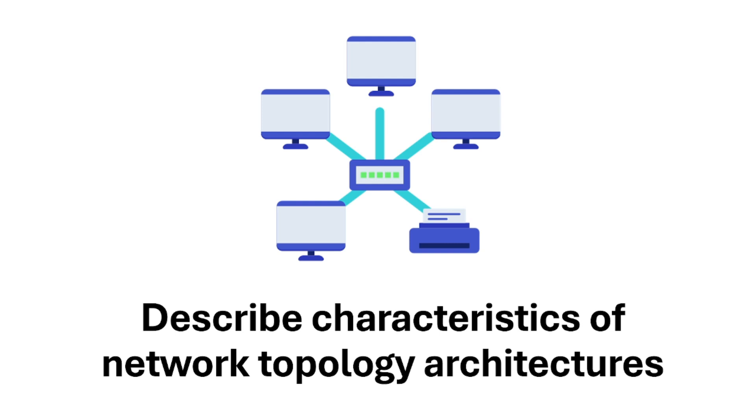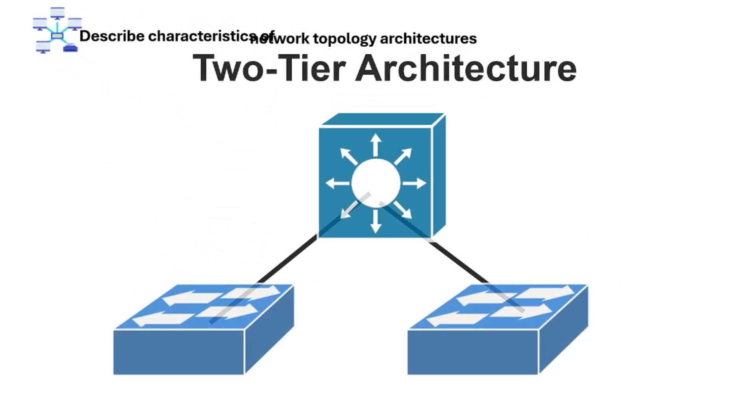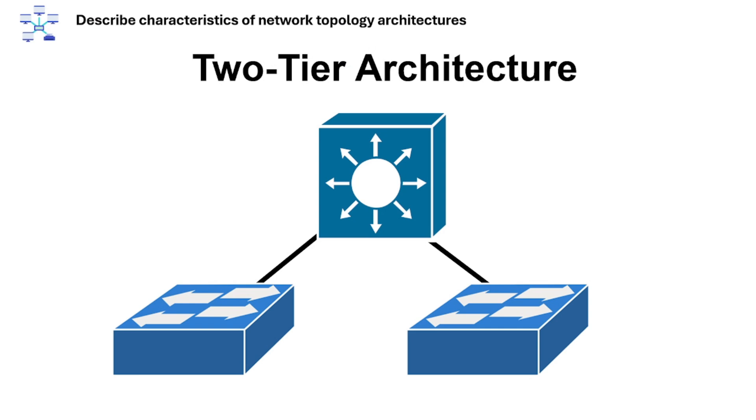This section is about characteristics of network topology architectures. Let's start with two-tier architecture.